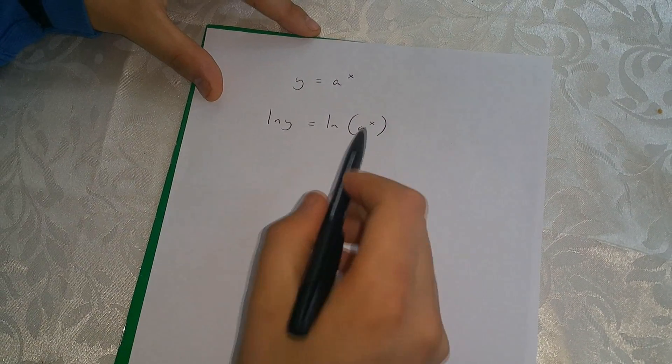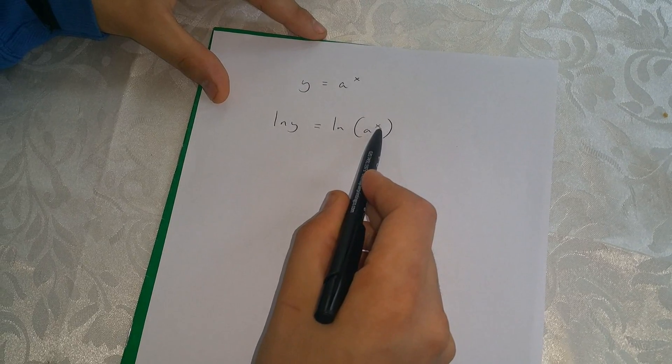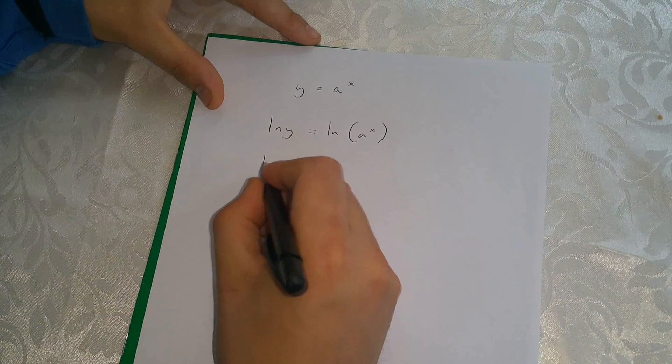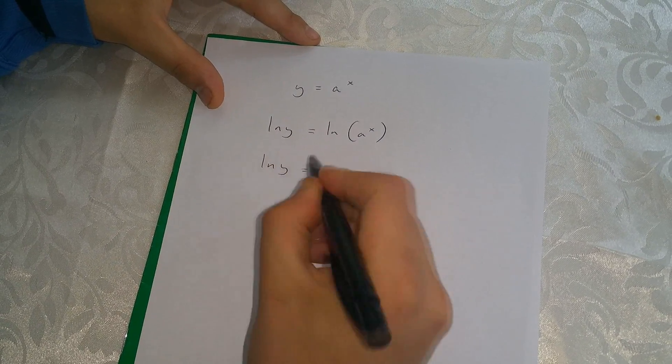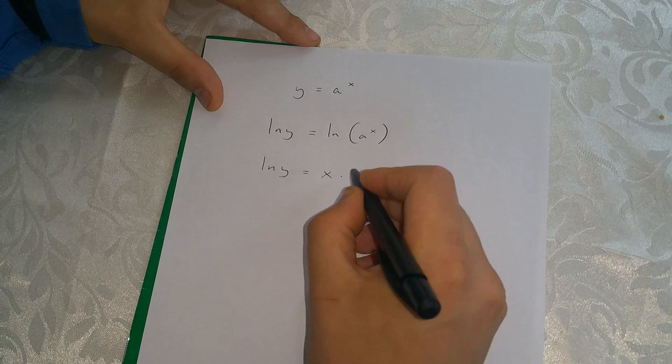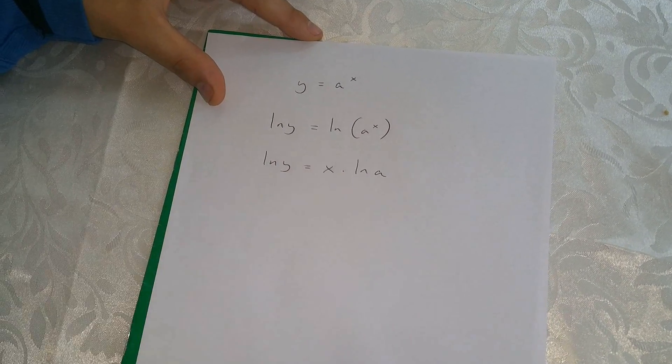Now we can take this x out of here. So we're left with ln y equals x times ln a.